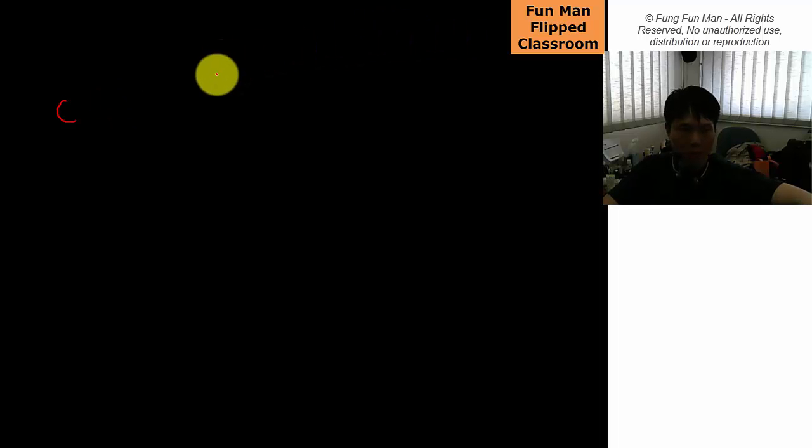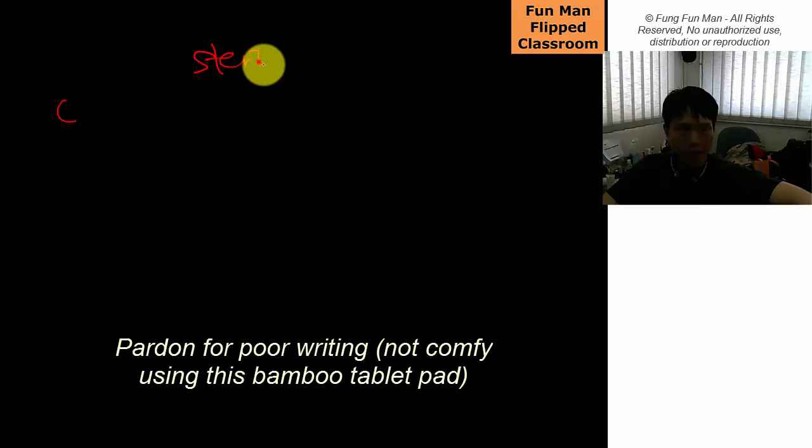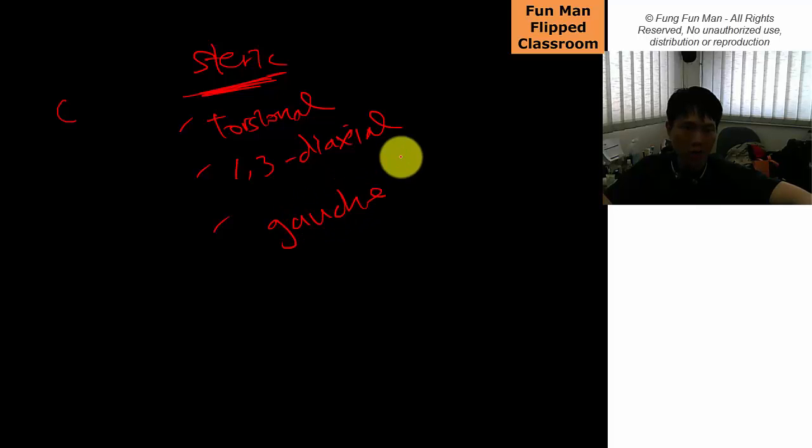Maybe you can copy down this mind map that I have for you. For steric, some people ask me, steric, what's under steric? For steric, you have got torsional, one-three diaxial interaction, angle interaction. All these comes under steric.